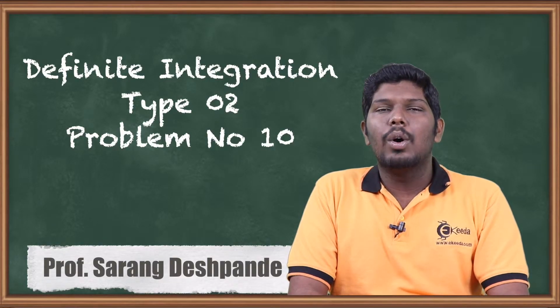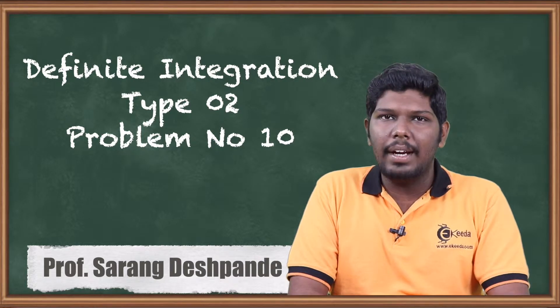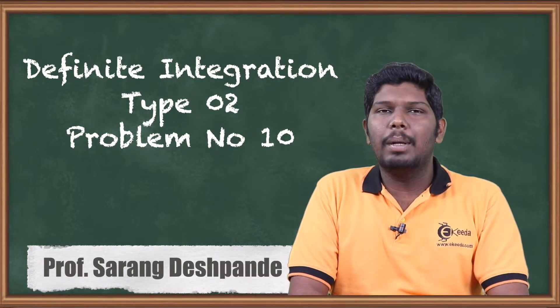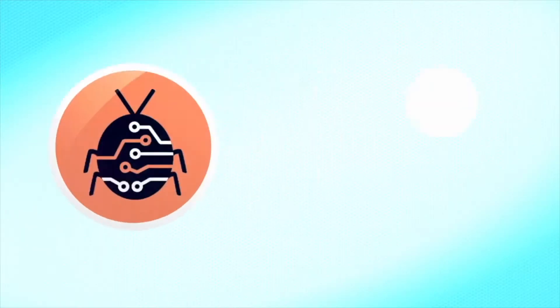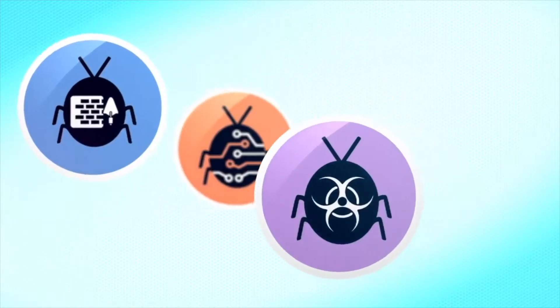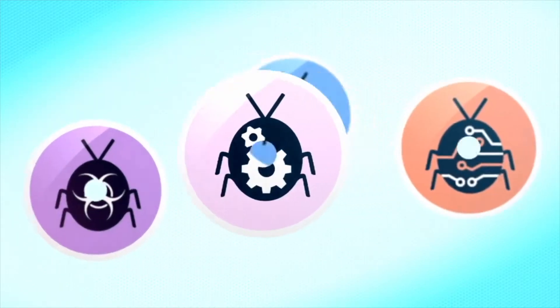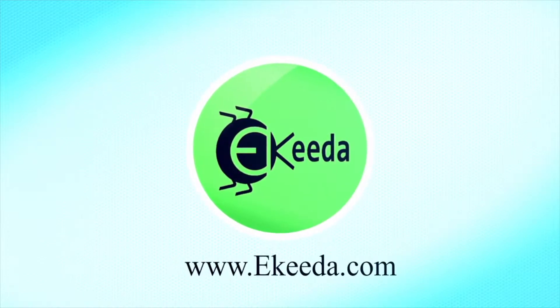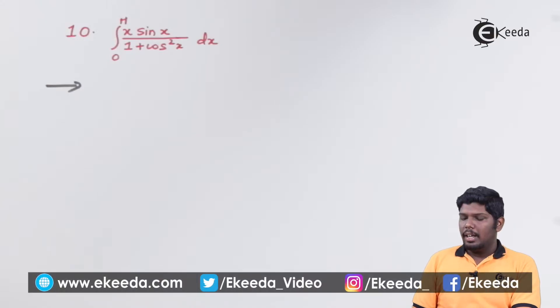Let us start with problem number 10: integral 0 to pi of x sin x upon 1 plus cos square x dx.